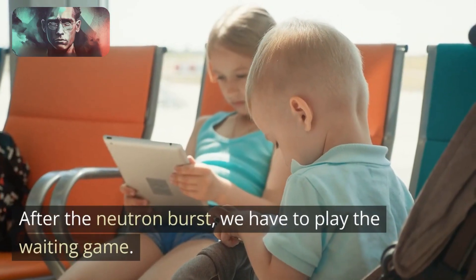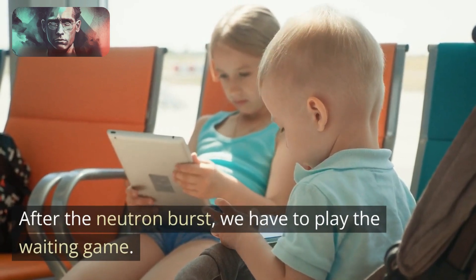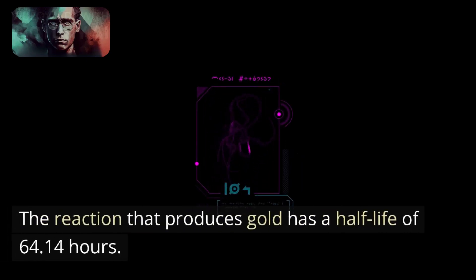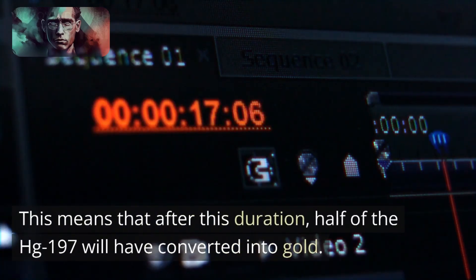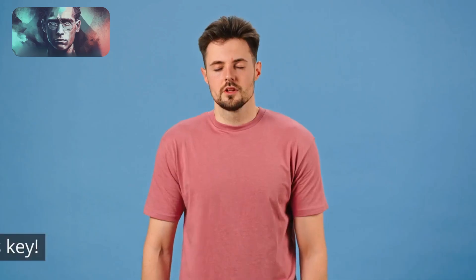After the neutron burst, we have to play the waiting game. The reaction that produces gold has a half-life of 64.14 hours. This means that after this duration, half of the HG-197 will have converted into gold. Patience is key.